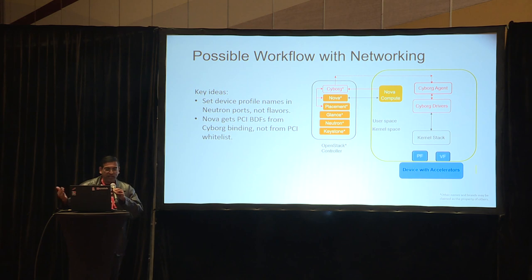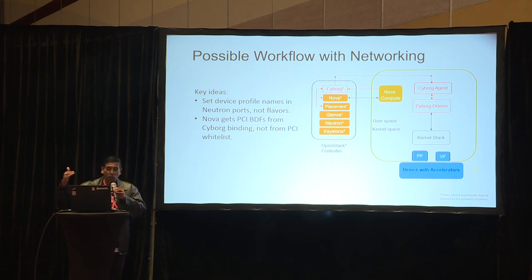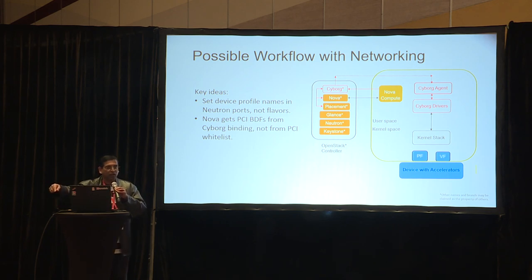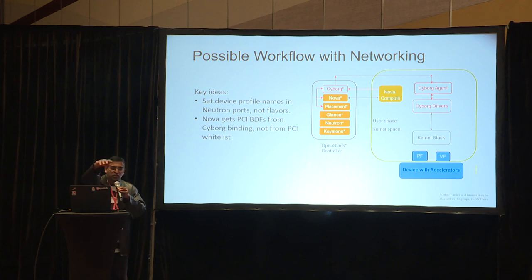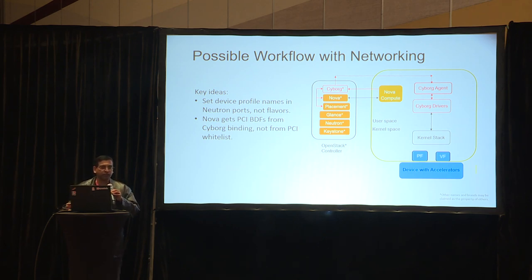The net result is that instead of getting PCI IDs from a whitelist, we're getting them from Cyborg. Cyborg would have taken into account what Nova requested in the binding process. Once the Cyborg binding completes, you get the PCI IDs and pass them to Neutron for port binding. From Neutron's point of view, there's very little change — the only thing we're proposing is that the port binding should include a device profile name as a key-value pair. That's the only change needed in Neutron.